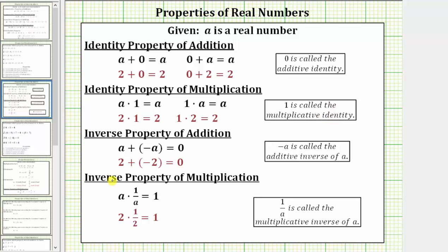The inverse property of multiplication is given as a times one over a equals one. Whenever we have a product equal to one, we are using the inverse property of multiplication, and this occurs when the two factors are reciprocals of one another, or we can say that one over a is the multiplicative inverse of a.